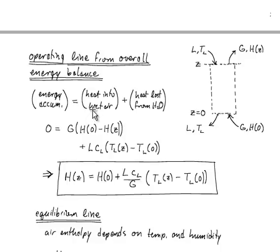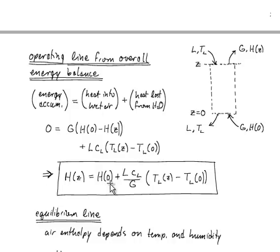At steady state, zero equals the heat flow into the wet air — the dry air flow rate G multiplied by the difference in enthalpy between the inlet at the bottom and the outlet at the top — compensated exactly by the heat lost from the water stream. This gives us that the enthalpy at the top equals the enthalpy at the bottom plus L times Cp of liquid divided by G, multiplied by the temperature difference of the liquid stream. This is our operating line.